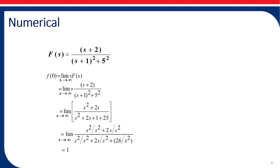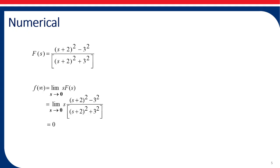Similarly, we can find out the final value of f(t) from this Laplace transform. We have to multiply F(s) by s and let s tend to 0. In this case, s is a multiplier in the numerator, so as s tends to 0, the function will tend to 0. So the final value comes out to be 0 and the initial value comes out to be 1.